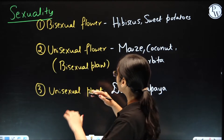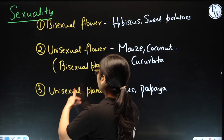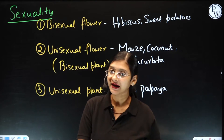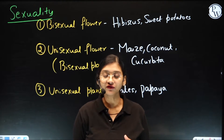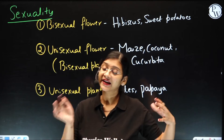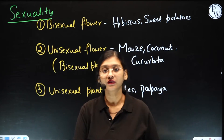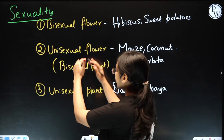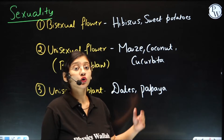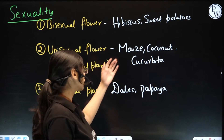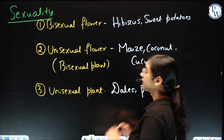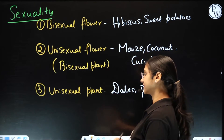So when I say unisexual flower, here it is the bisexual plant, which means there is going to be a plant which will have both male as well as female flowers. So this condition — some of the examples are maize, coconut, and cucurbita. So here we will be able to see a bisexual plant with unisexual flowers.